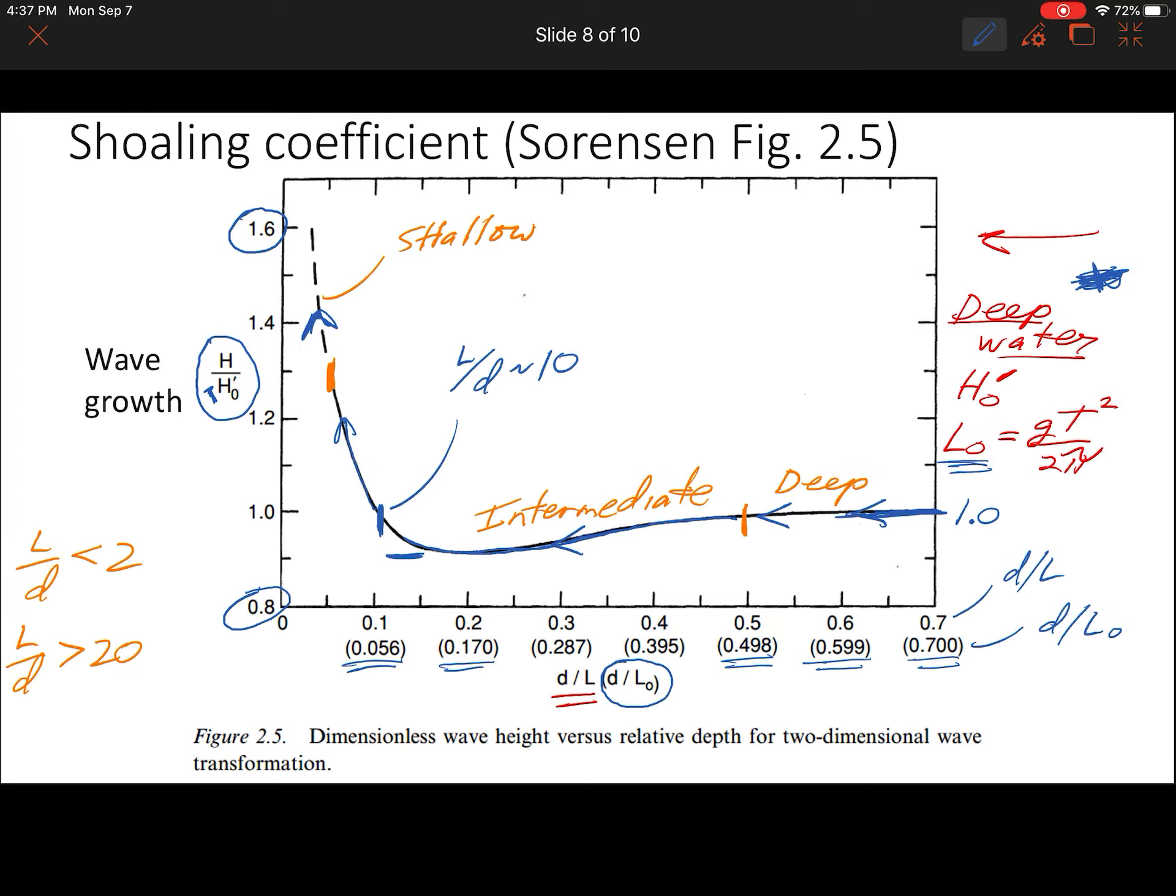If you say I'm going to go from deep water and then I want to know what its wave height is in five meters, you would take five for that value of d. You would divide by the offshore wave height.